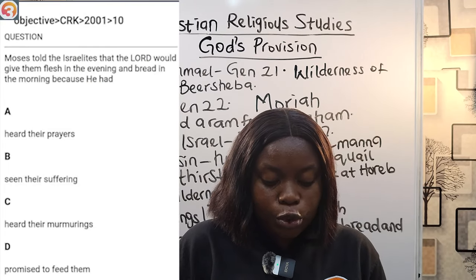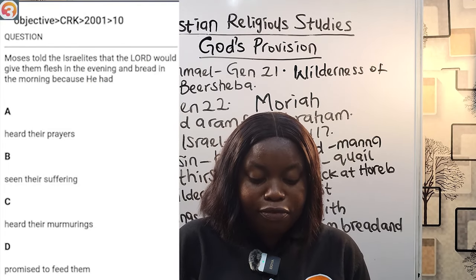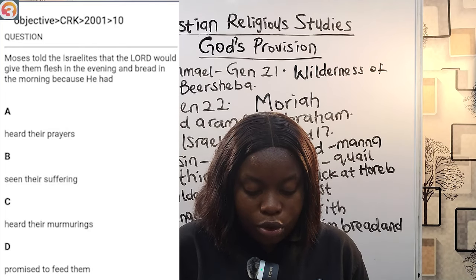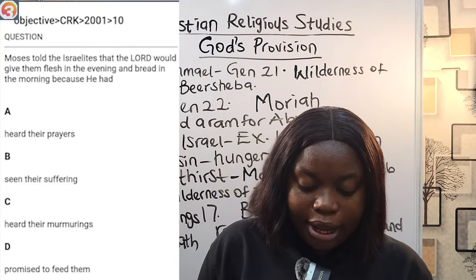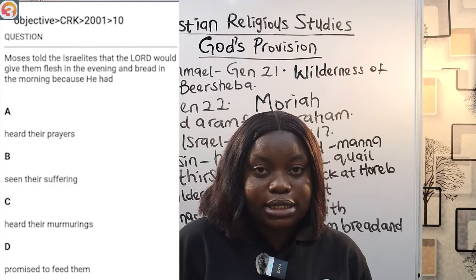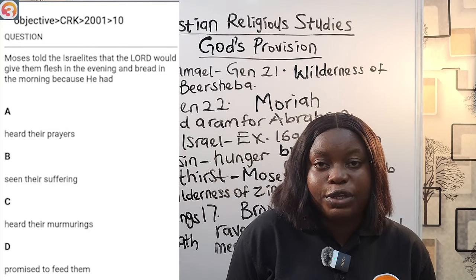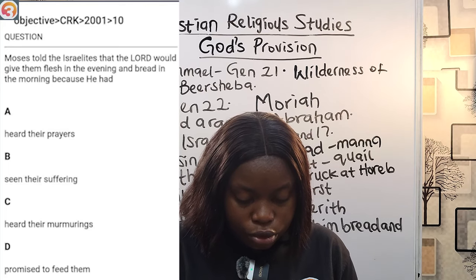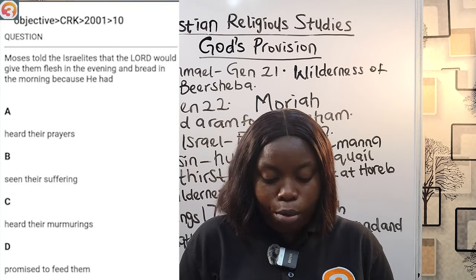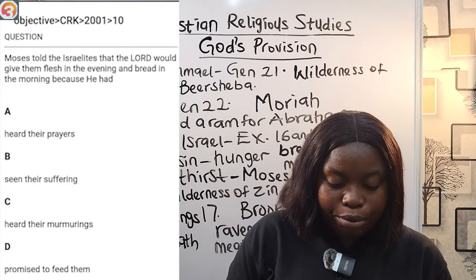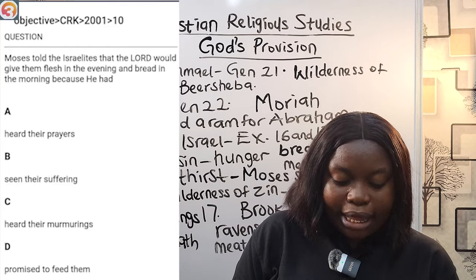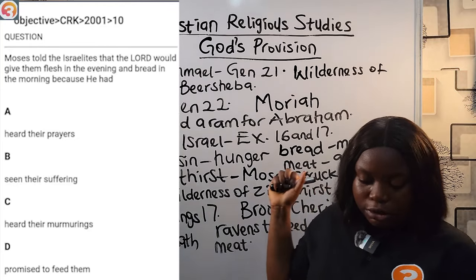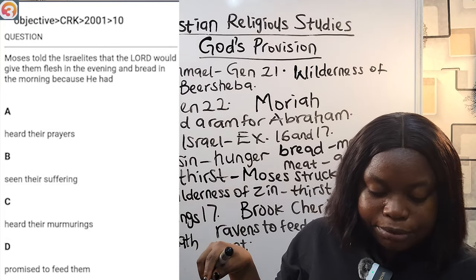Here is a question from 2001: Moses told the Israelites that the Lord would give them flesh in the evening and bread in the morning because he had — A. Heard their prayers, B. Seen their suffering, C. Heard their murmurings, D. Promised to feed them. The answer is C — God had heard their murmurings and promised to send bread and meat for them in the morning and in the evening.